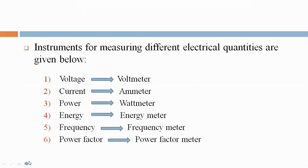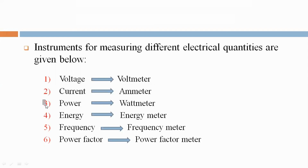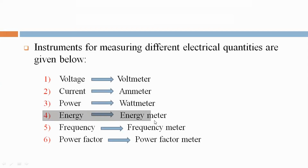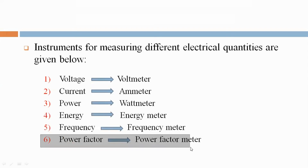To summarize: voltage is measured by a voltmeter; current is measured by an ammeter; power is measured by a wattmeter; energy is measured by an energy meter; frequency is measured by a frequency meter; and power factor is measured by a power factor meter.